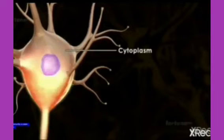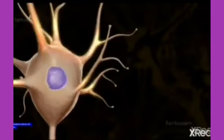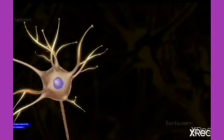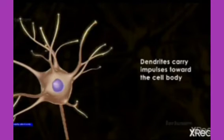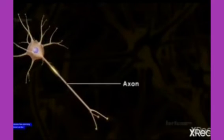These are the dendrites. They take information from the receptors or other neurons and carry information towards the cell body. This lengthy part is the axon. The axon carries information from the cell body to other neurons.